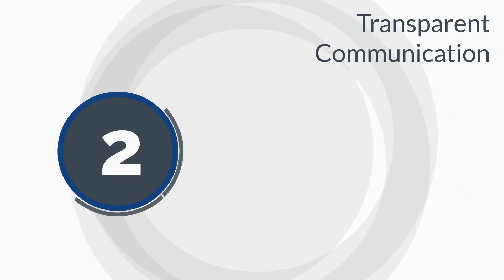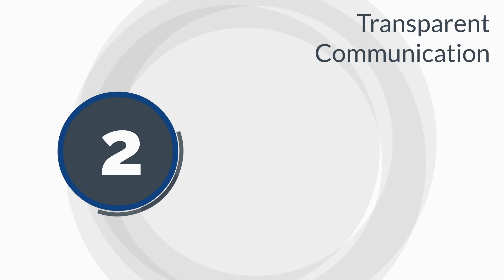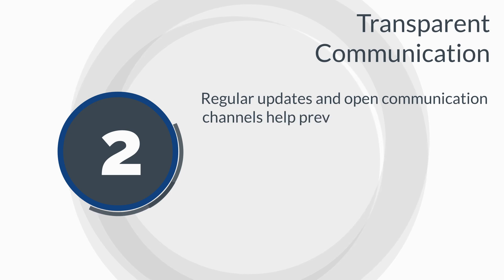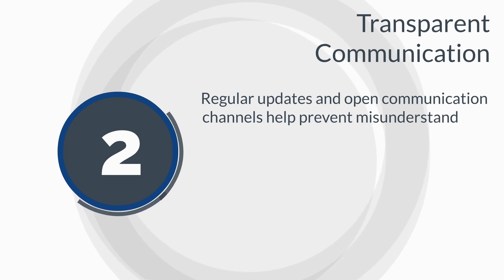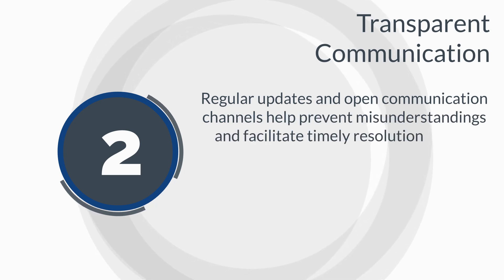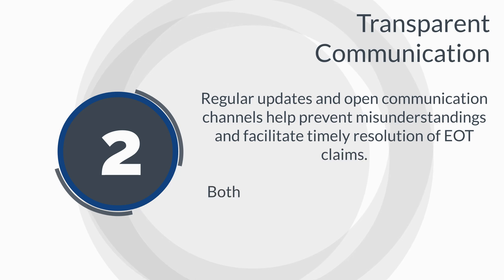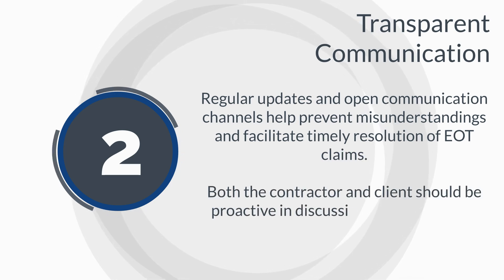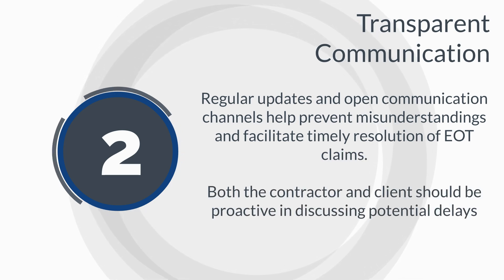Number 2: Transparent Communication. Effective communication between all parties is critical. Regular updates and open communication channels help prevent misunderstandings and facilitate timely resolution of EOT claims. Both the contractor and the client should be proactive in discussing potential delays and their impacts.